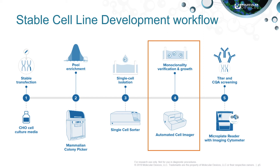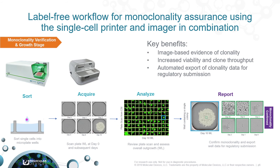Molecular Devices provides an end-to-end label-free workflow for monoclonality assurance using the Single Cell Printer and CloneSelect Imager in combination. Your cell suspension is loaded into a disposable microfluidics cartridge on the Single Cell Printer, where cells are individually screened and isolated into 96 or 384 well plates based on size, shape, or fluorescence. The software then provides image-based documentation of each single cell event. Once finished, cells are allowed to settle to the bottom of the plates and are imaged on the CloneSelect Imager, where they are measured and tracked from a single cell as they grow into a colony.